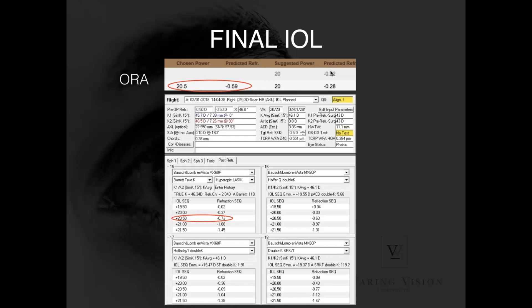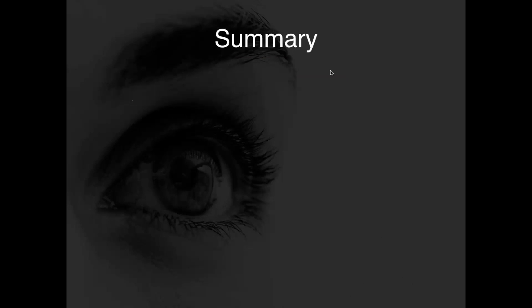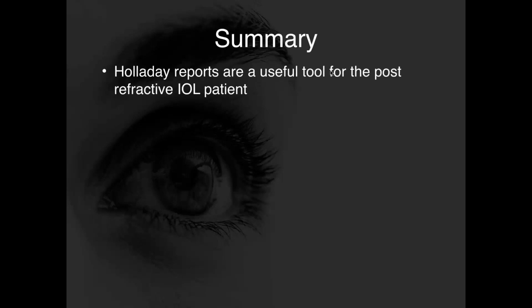In retrospect, a 20-diopter lens probably would have been a great choice—but I'm always erring a little bit more myopic with a highly hyperprolate cornea. Post-operatively, this patient did quite well, ended up a little myopic as intended, with excellent reading vision and very good distance vision—a wonderful subjective outcome with a monofocal aberration-free lens.